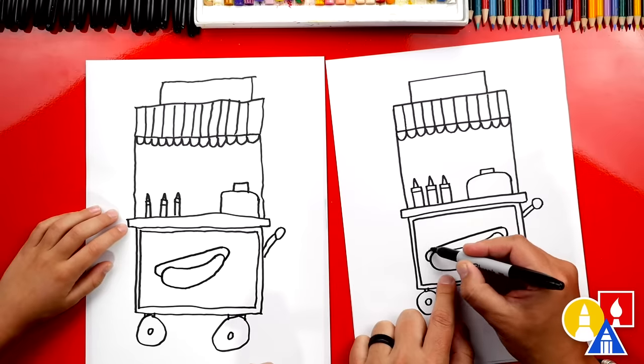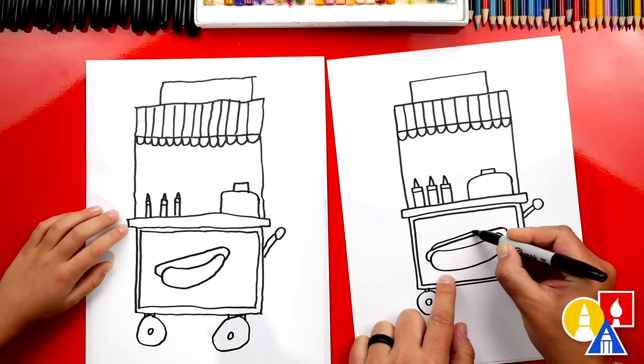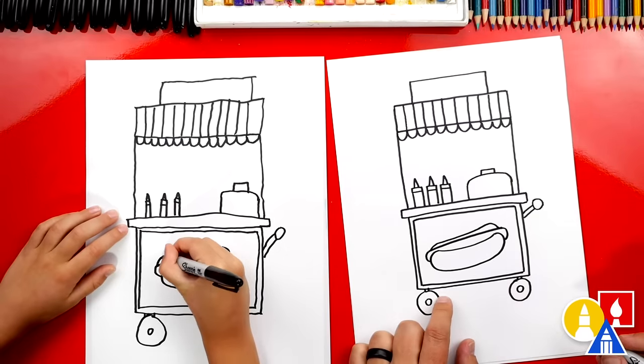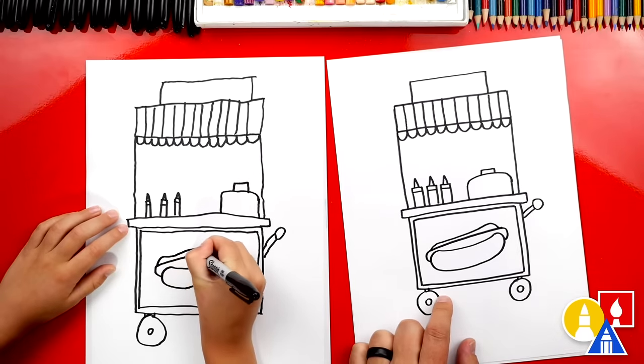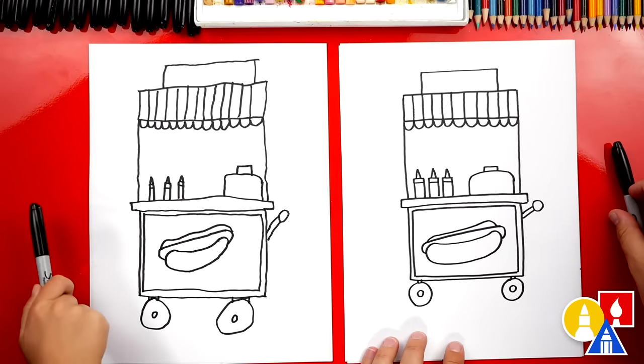Now we need to draw the bun on the other side. We're going to draw a curve that comes up and kind of just comes across to the other side and then connects back in. It kind of goes down a little bit and then back up. Awesome, we did it. We finished drawing our hot dog stand.